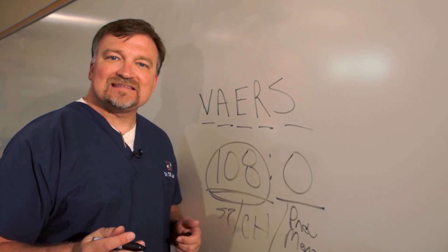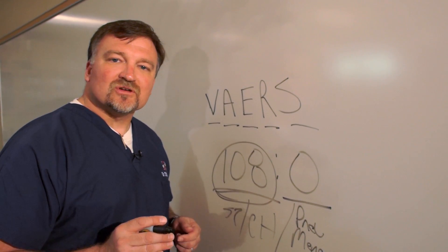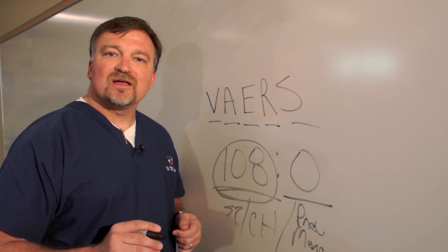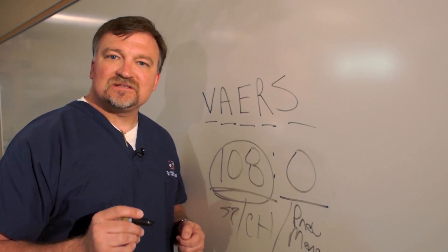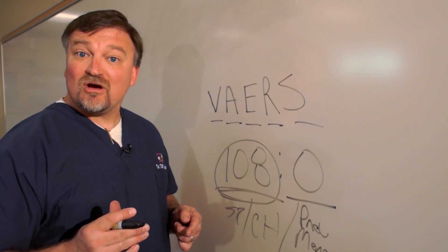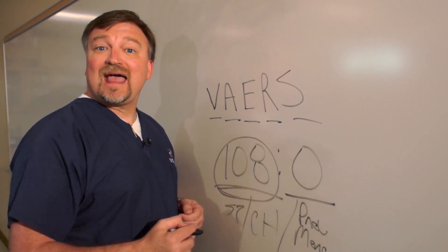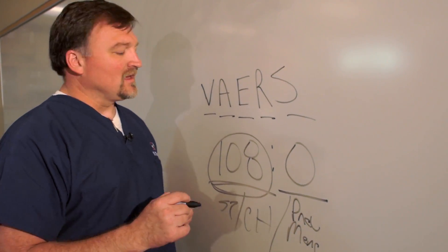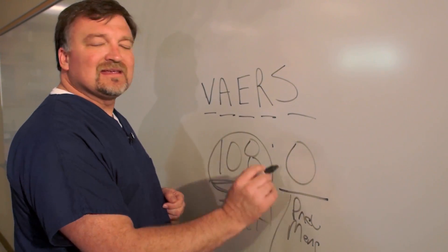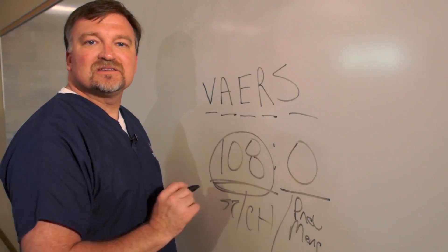When you look at statistics in the United States, 11 children under the age of 4 die every single day. It's not too hard to figure out that some of those deaths are going to happen right after they've had that vaccine. But that's something that's never mentioned in this 108 number.